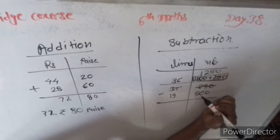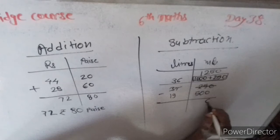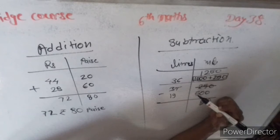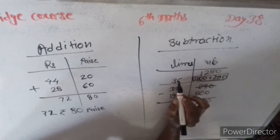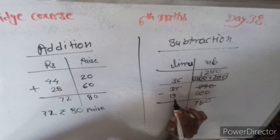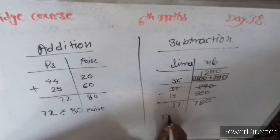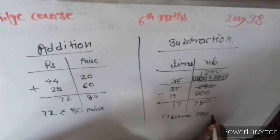Now 1250 minus 500. 0 goes to 0, 5 minus 0, 5. 16 minus 5, 16 minus 9, 7. 2 minus 1, 1. So 17 liter and 750 milliliter. Do you understand? Very good.